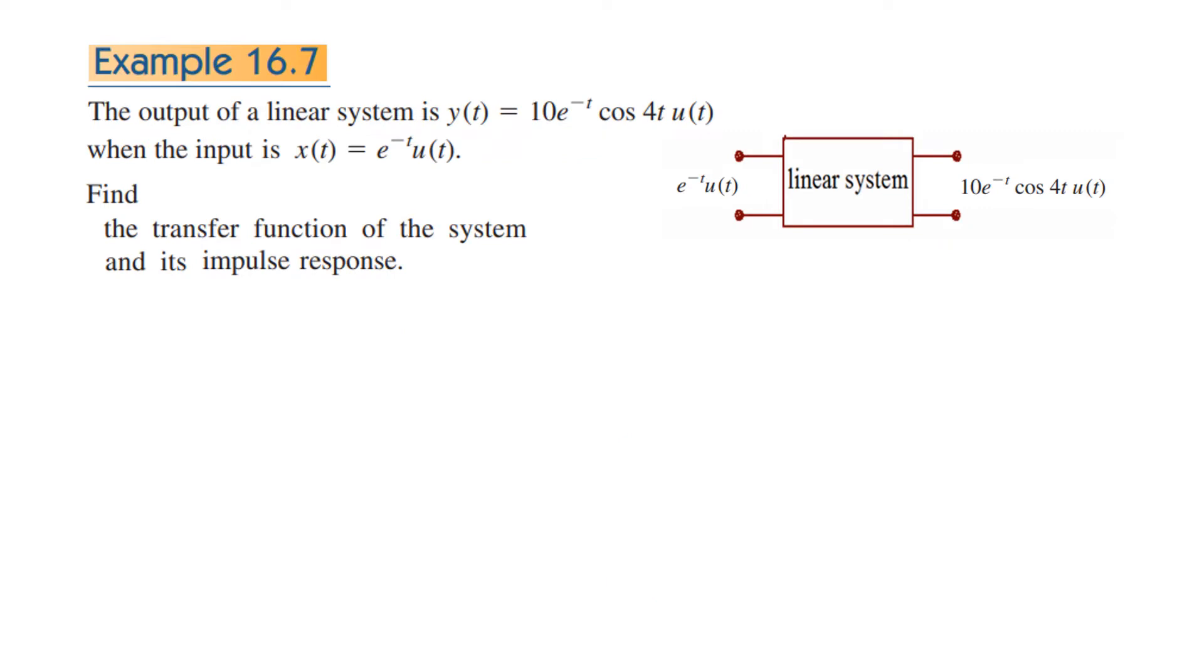So example 16.7: the output of a linear system is this value given. So this is the linear system, its output is 10e^t cos 4t u(t) and the input is x(t) = e^(-t) u(t). We have to find the transfer function of the system, that is H(s), and also we have to find the impulse response, that is h(t).